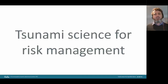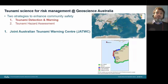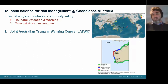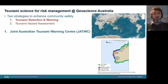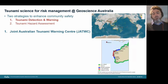Now touching on tsunami science for risk management — the things GA is involved in. There are two general strategies to enhance community safety from tsunamis. First, tsunami detection and warning: if an event happens, alert the public and get people and infrastructure out of the way. Second, tsunami hazard assessment: helping to plan where to place infrastructure and how to respond when there are only a couple of hours — for example, which areas need to be evacuated.